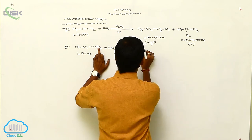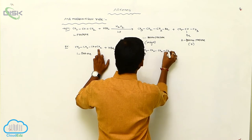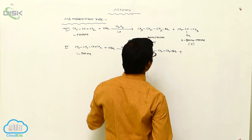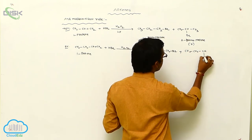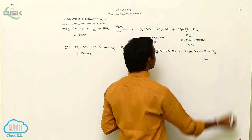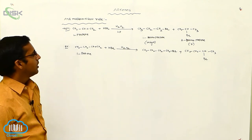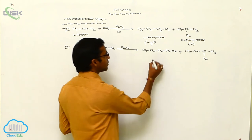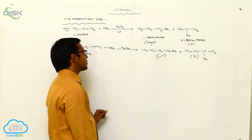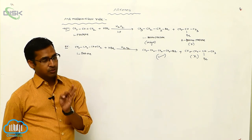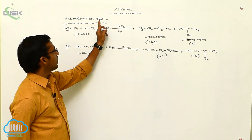The products of 1-Butene reacting with HBr and hydrogen peroxide are CH3CH2CH2CH2Br (1-Bromobutane) as the major product, and CH3CH2CHBrCH3 (2-Bromobutane) as the minor product. So the Anti-Markovnikov rule states that the negative charge (Br⁻) attaches to the carbon bearing the greater number of hydrogen atoms.